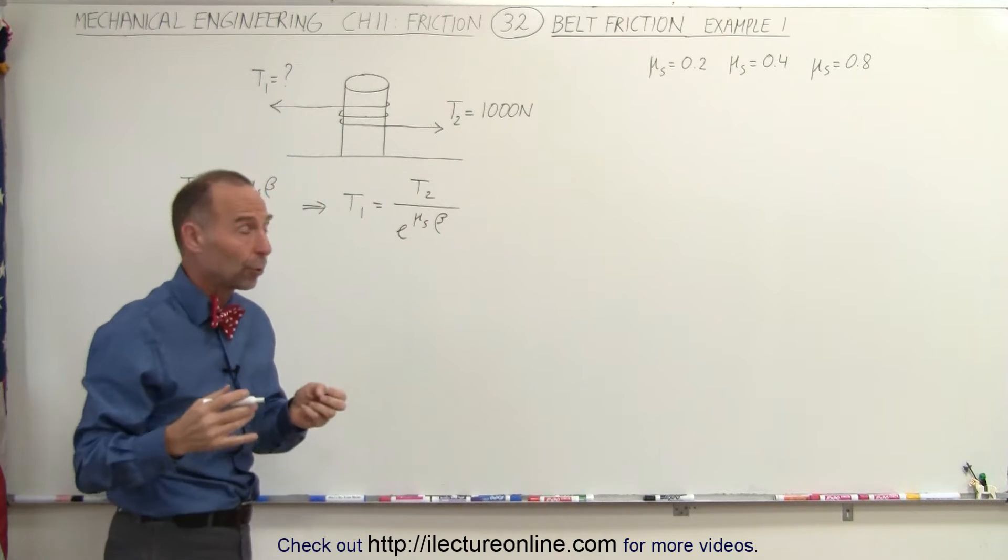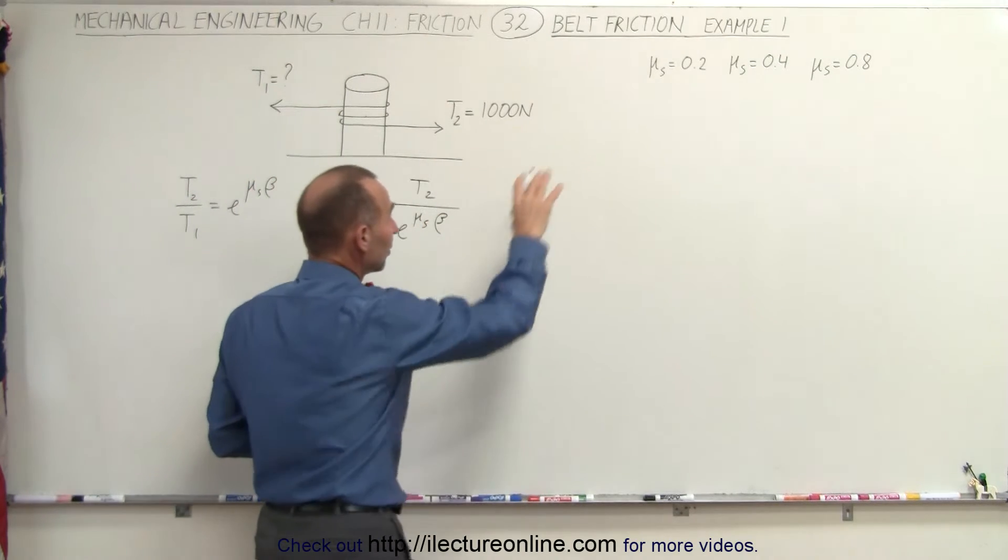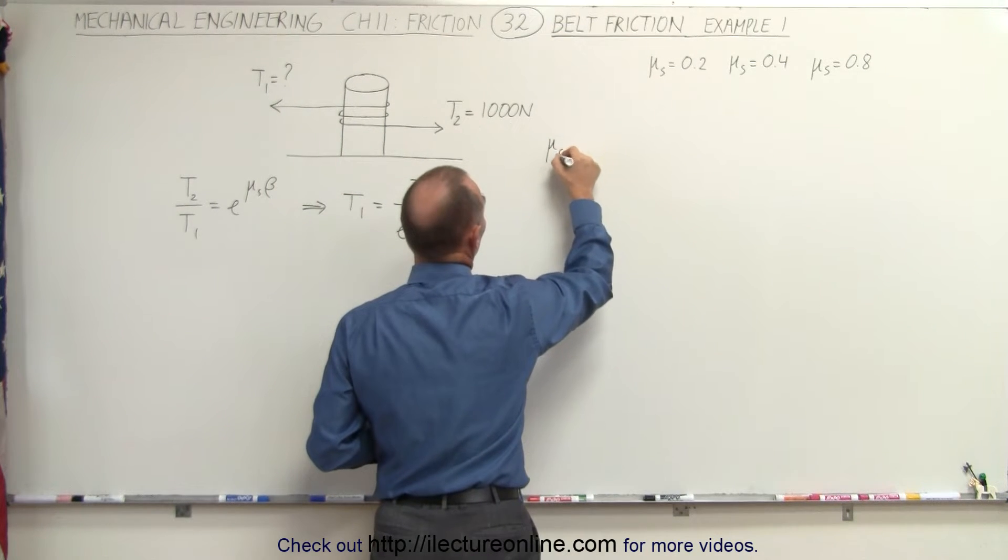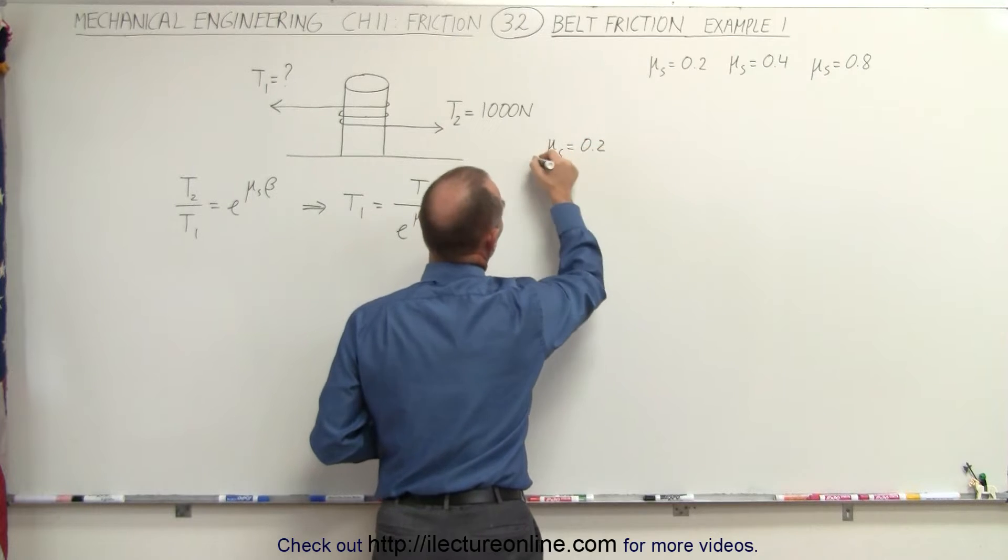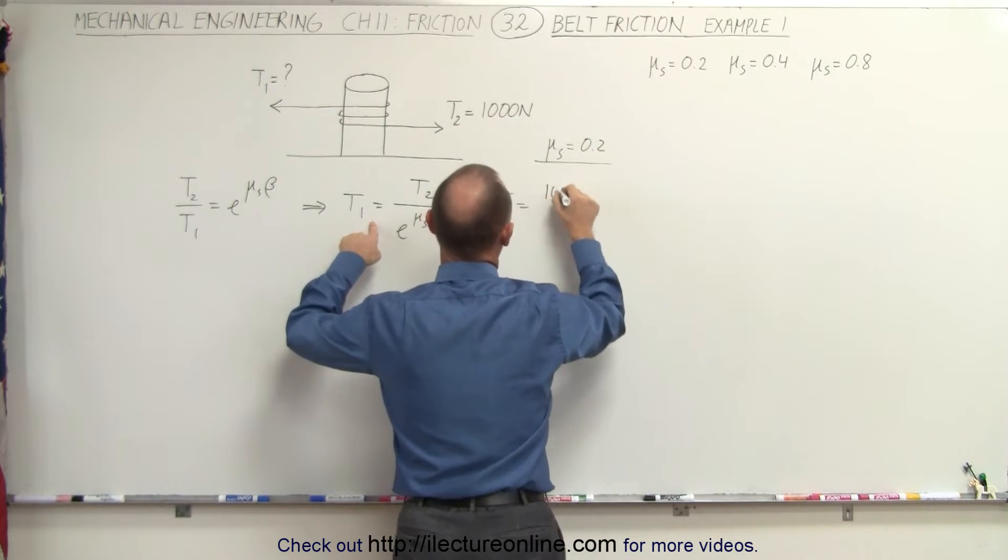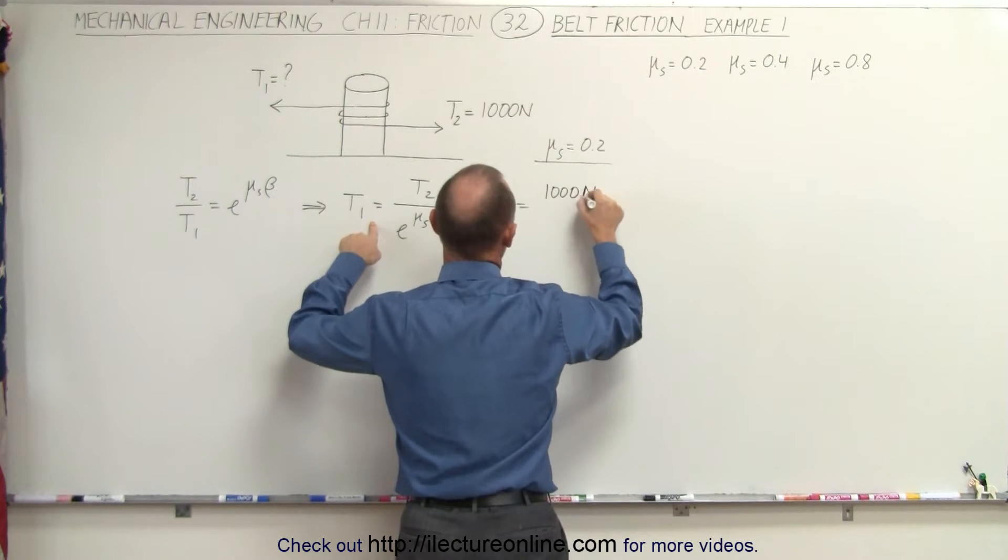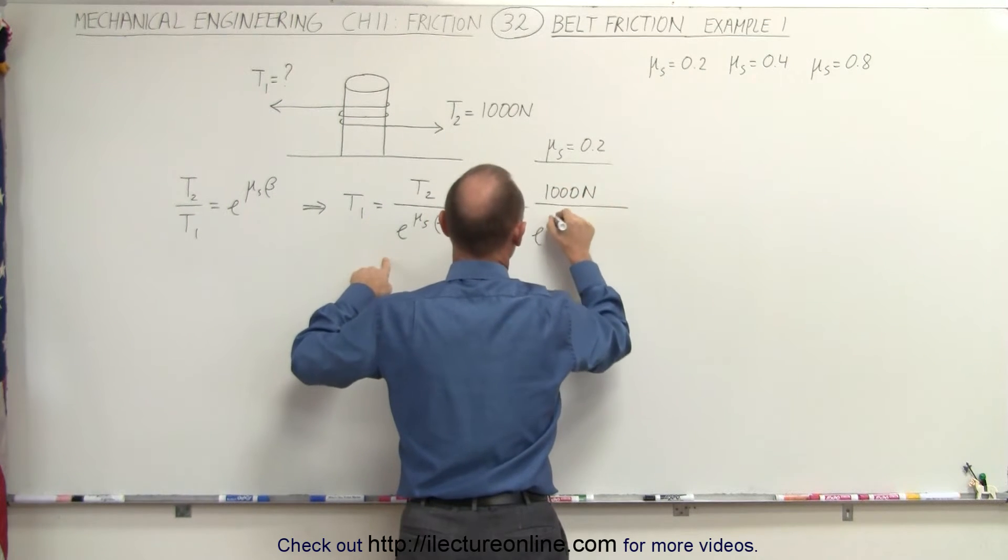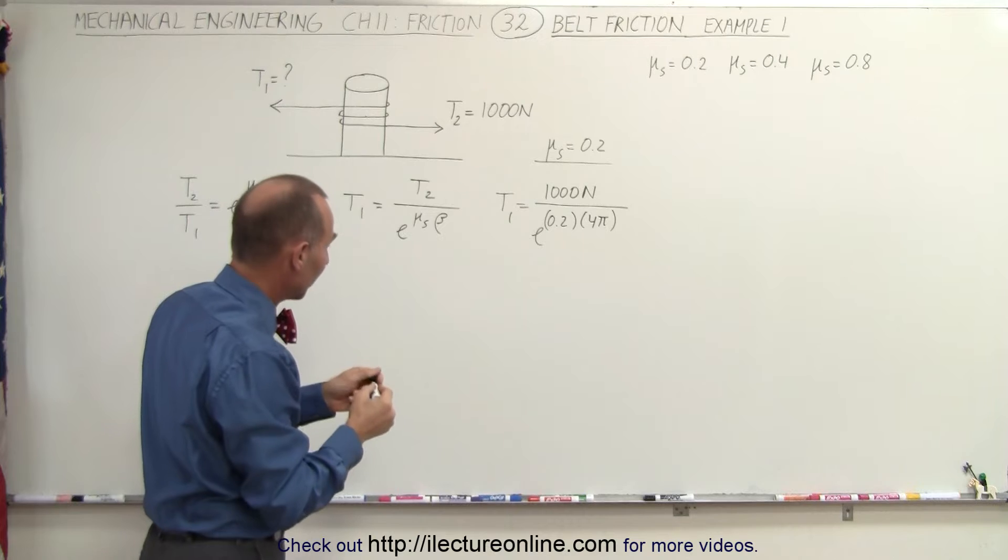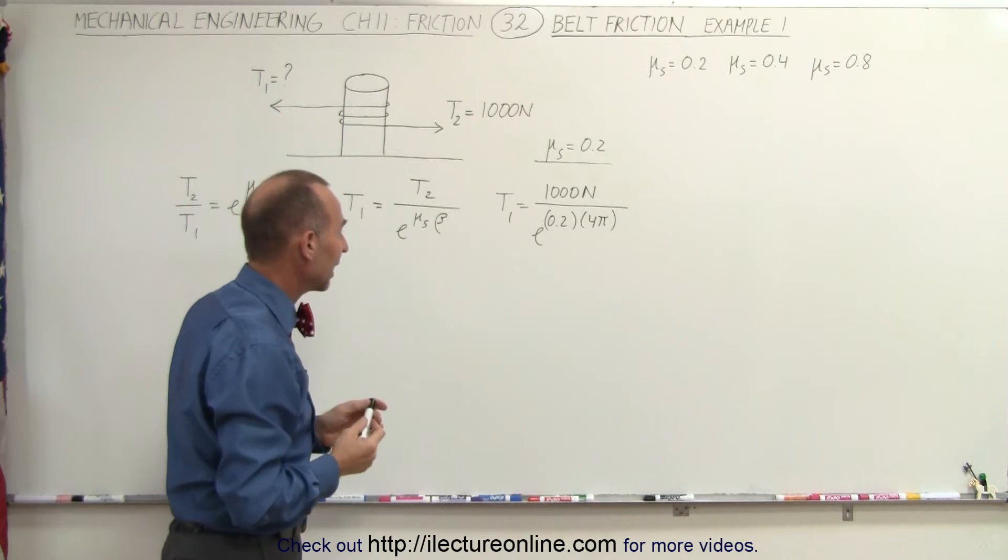And we're going to calculate that for three of these coefficients of friction. So we're going to use the first one where μₛ is equal to 0.2 and that means that T1 will be equal to 1,000 newtons divided by e to the 0.2 times 4π. Two complete revolutions is 2π radians and yes we do have to use radians for the angle.